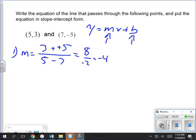Now to find b, step 2. What you do is you take the m that you just found, m equals negative 4, and you pick one of the points and plug that in for x and y.